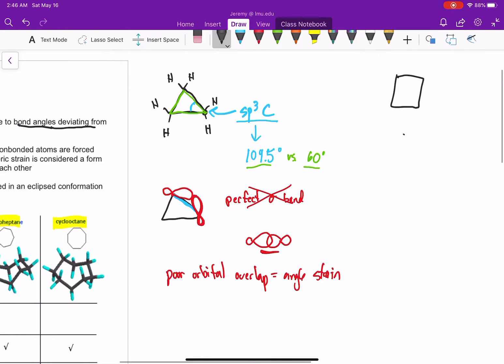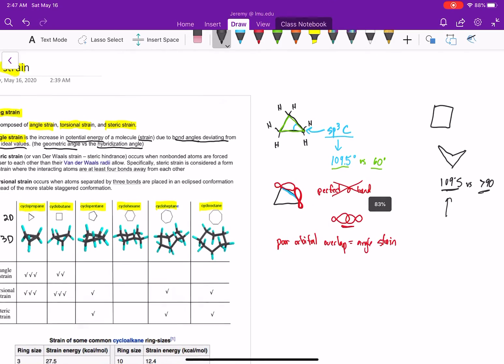And it turns out if you draw cyclobutane in a three-dimensional shape, it does bend, so it's not a perfect square. But again, our bond angles, they want to be 109.5 versus a little greater than 90. These are still not matching up well. So we definitely have angle strain with cyclobutane. But once we get to five membered rings or higher, then you can get that ideal 109.5 and get good orbital overlap. So really, we see angle strain is only an issue for our small rings, three or four.